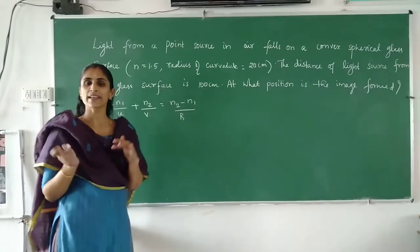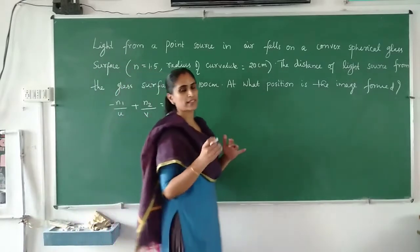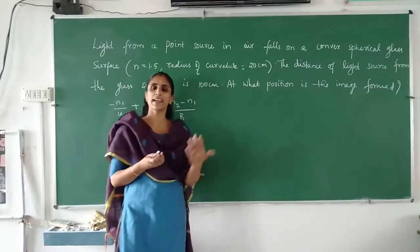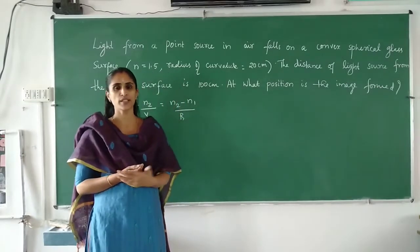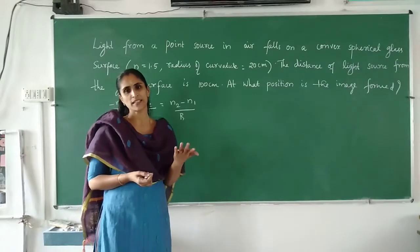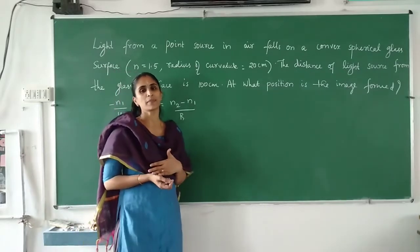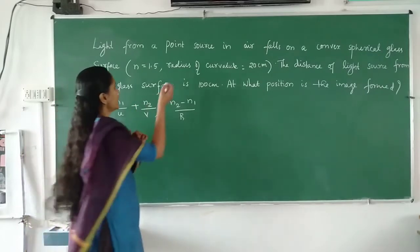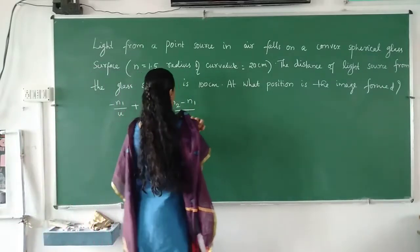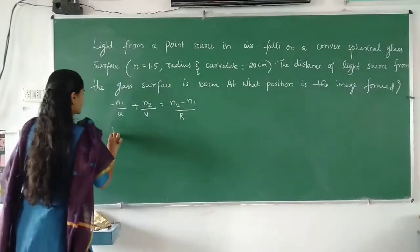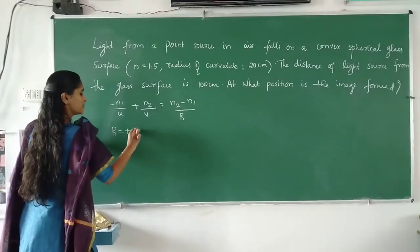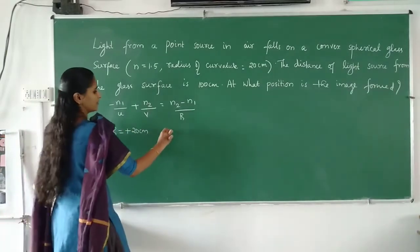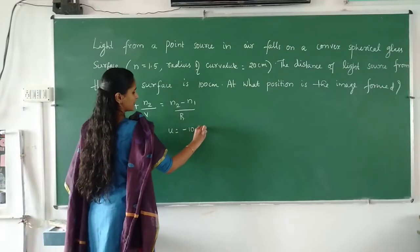Here we apply the sign convention. We assume that light is incident from left to right. All distances measured in the direction of incident light are taken as positive, and opposite as negative. Height above the principal axis is positive, and height below is negative. For a convex surface, the radius of curvature will be positive. So R is equal to plus 20 cm. Object distance will be negative, so U is equal to minus 100 cm.